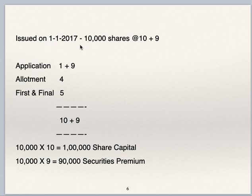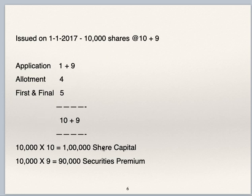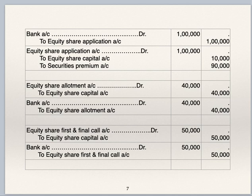On 1st January 2017, 10,000 shares are issued at Rs 19, with Rs 9 as premium. On application Rs 10 (Rs 1 capital + Rs 9 premium), on allotment Rs 4, on first and final call Rs 5 — total Rs 10 goes to capital and Rs 9 to securities premium. 10,000 shares are issued; Rs 90,000 would go to the securities premium account. First, we will see the journal entries for the issue of shares. Bank account debit to equity share application account — 10,000 shares at Rs 10, so it is Rs 1 lakh.